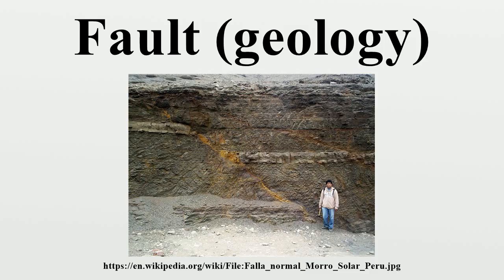Slip is defined as the relative movement of geological features present on either side of a fault plane, and as a displacement vector. A fault's sense of slip is defined as the relative motion of the rock on each side of the fault with respect to the other side. The throw of the fault is the vertical component of the dip separation and the heave of the fault is the horizontal component — as in, throw up and heave out.